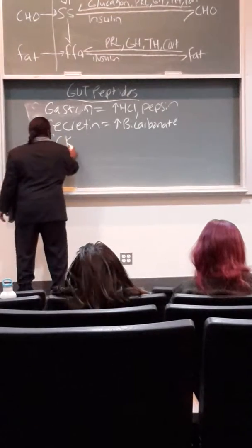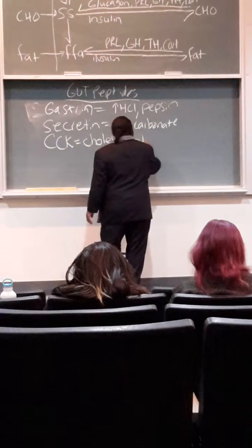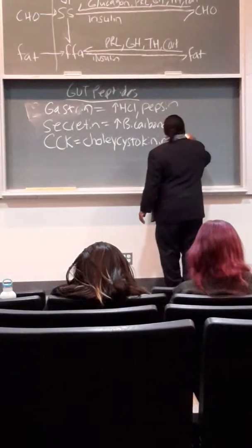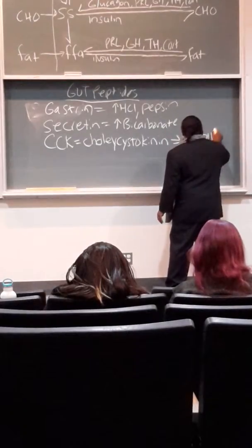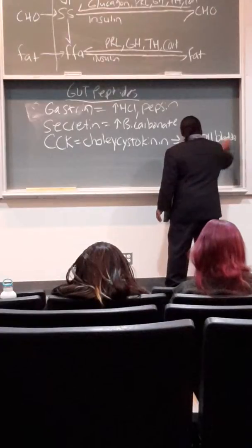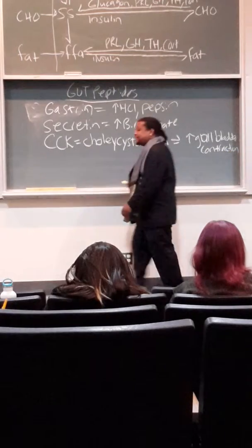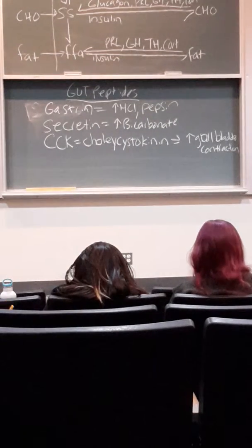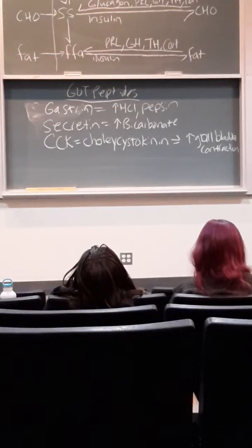Cholecystokinin responds to fat. Also comes from the small intestine. And it, okay, so here's one that's a true endocrine. It's secreted by the small intestine and it causes the gallbladder to contract. And the gallbladder then releases the bile salts that help emulsify the fat.